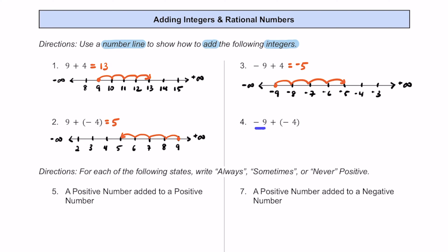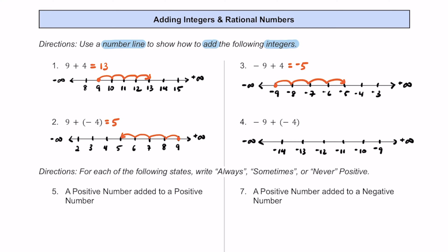For number 4, we have negative 9 plus negative 4. This one's interesting because we have two negative numbers. Set up a number line with negative 9 on the right side, then put numbers to the left: negative 10, negative 11, negative 12, negative 13, negative 14. Starting at negative 9, we move left four spaces: 1, 2, 3, 4. Adding negative 9 and negative 4 equals negative 13.